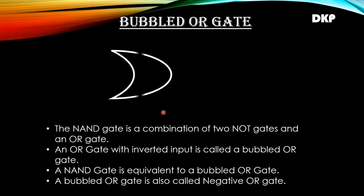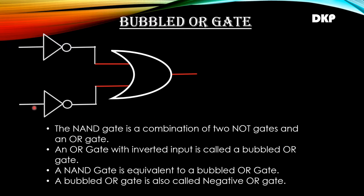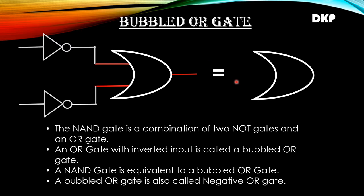The NAND gate is a combination of two NOT gates and an OR gate. So how does it look like? This is the logic symbol of OR gate, which has two inputs, and we are going to connect two inverters to these inputs. The first inverter is connected to the first terminal of this OR gate and the second inverter is connected to the second terminal of this OR gate, with one output. So this whole diagram is called the NAND gate.